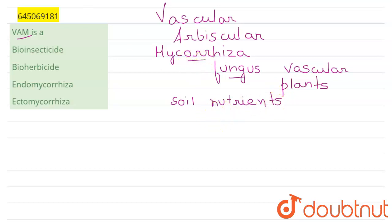This type of symbiotic association is known as mycorrhiza. If we see our options here, VAM is a mycorrhiza, and what type of mycorrhiza is it? It is an endomycorrhiza, meaning that they penetrate deep into the root.